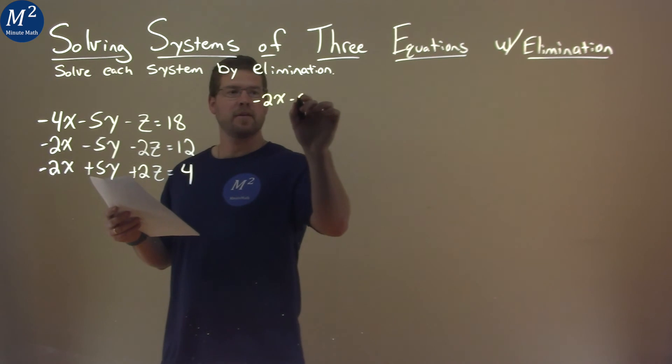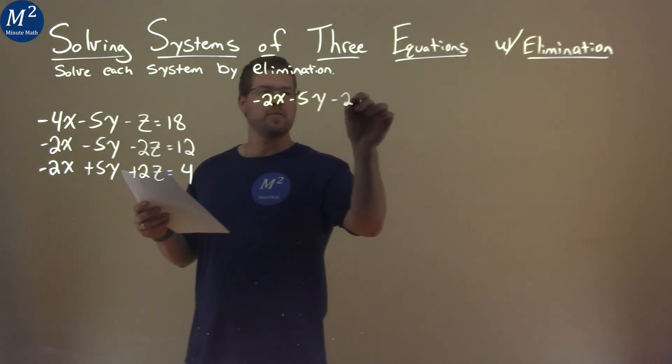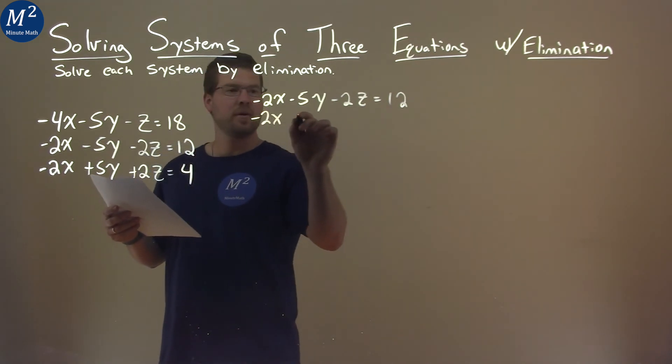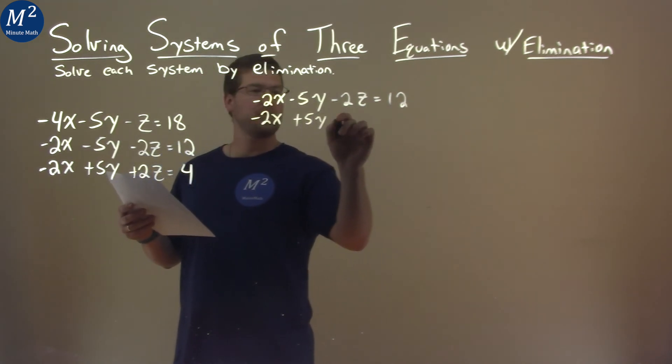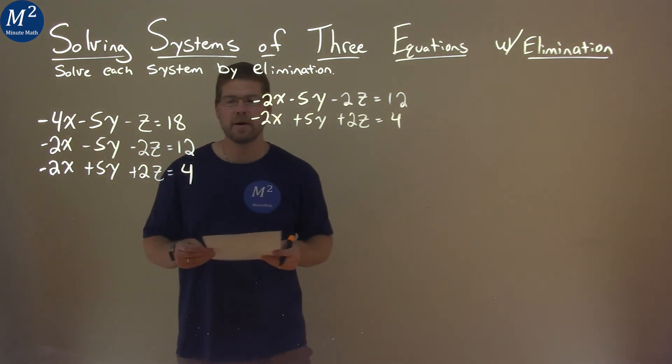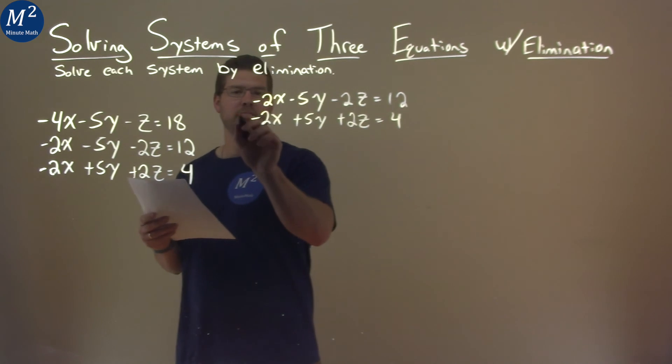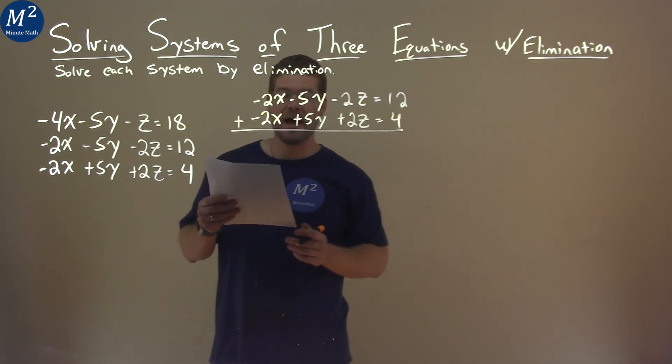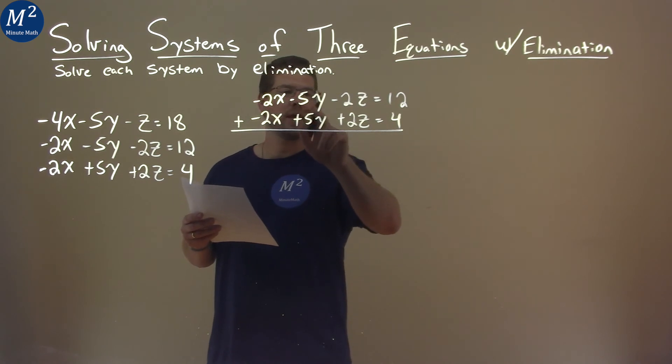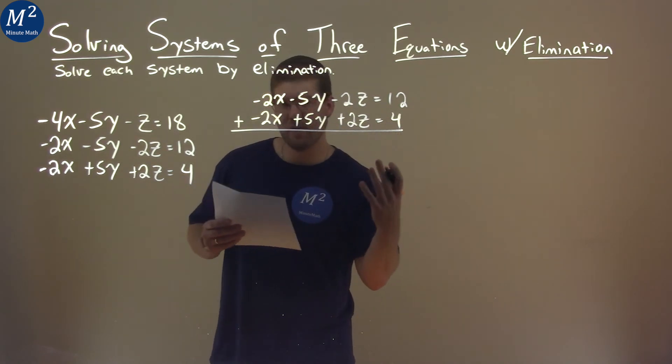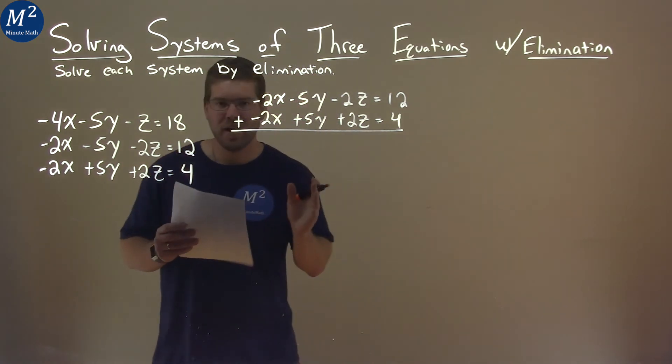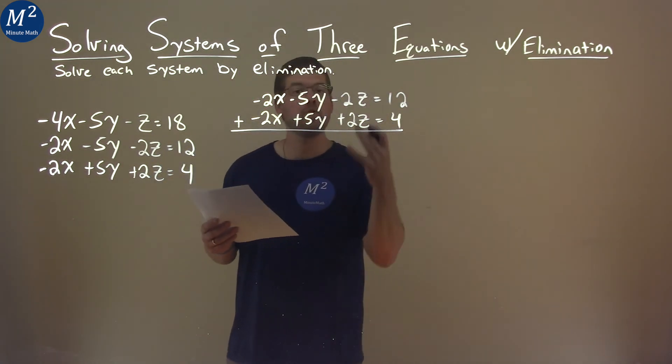Negative 2x minus 5y minus 2z equals 12. Negative 2x plus 5y plus 2z equals 4. So when we add these together, what do we notice is going to happen? Well, I can see that the 5y's will cancel. Negative 5y plus 5y is just 0. And negative 2z plus 2z also cancels. And this is pretty cool with this equation that two variables will cancel.